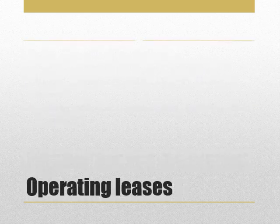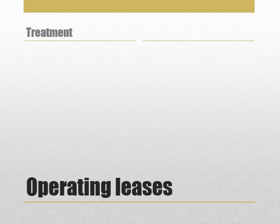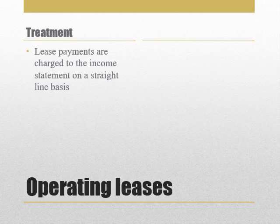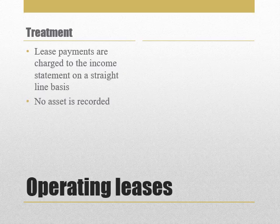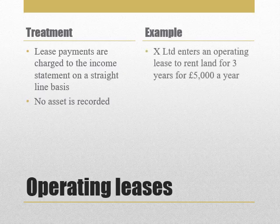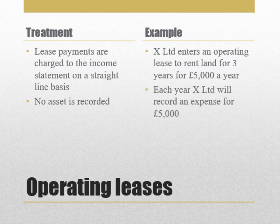Finally, let's look at how we deal with operating leases. The treatment is quite straightforward: we simply charge the lease payments to our statement of profit and loss on a straight-line basis. No asset is recorded in the statement of financial position, nor do we record a liability. For example, X Limited enters an operating lease to rent land for three years for £5,000 a year. Each period, X Limited will record an expense of £5,000 in its statement of profit and loss.